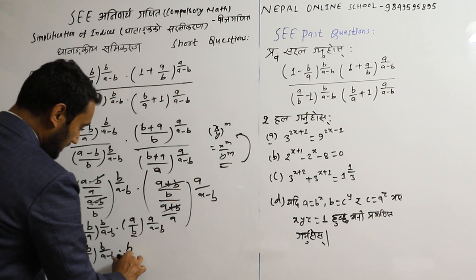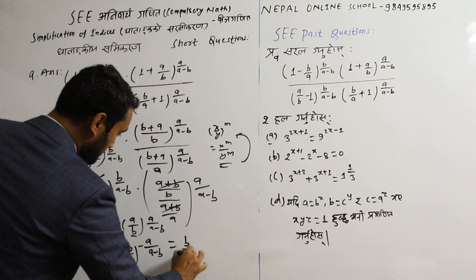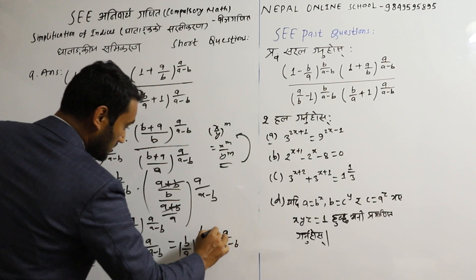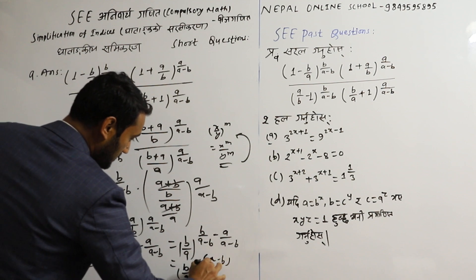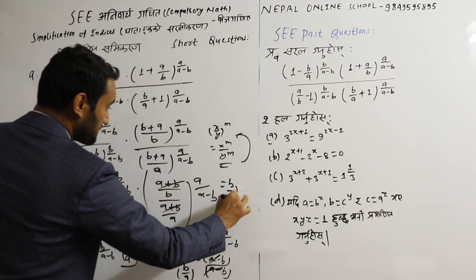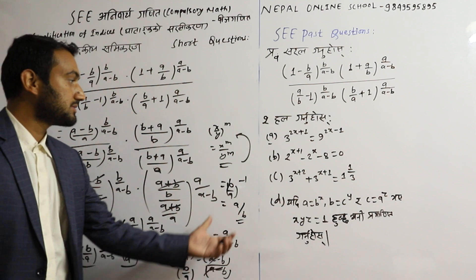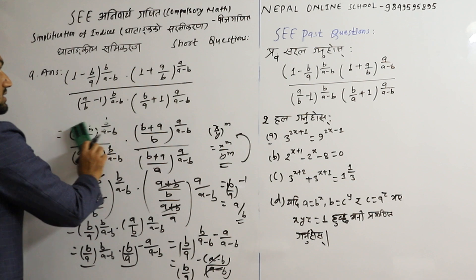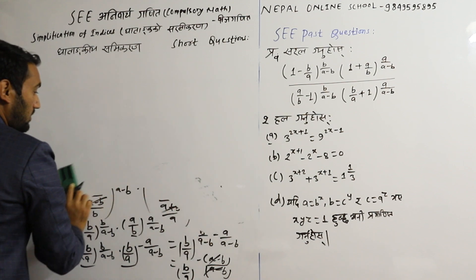If b by a is the power of negative minus a upon a minus b, then b by a power of b upon a minus b minus a upon a minus b. We cancel a minus b by a minus b, so b by a minus b. The result simplifies to b by a minus b.